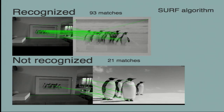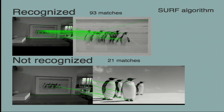For our application we use the SURF algorithm, which is an approximation of SIFT. We use it because it is more computationally performant, so for real-time recognition it is better. However, the number of key points found by this algorithm is significantly lower, meaning the difference between the recognized and not-recognized case can be very small. So we have to find a strategy to avoid false positives.